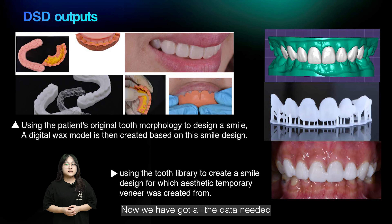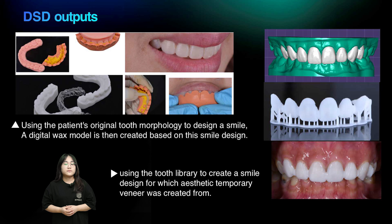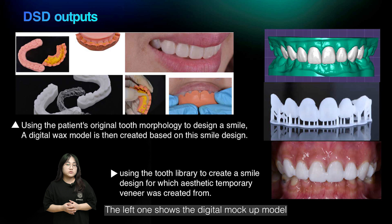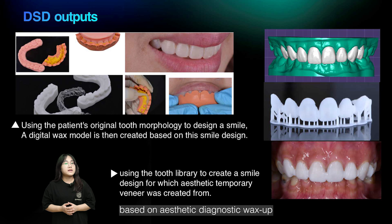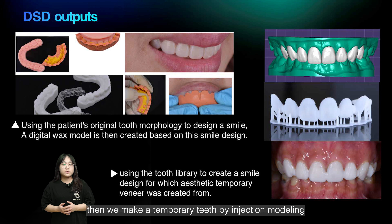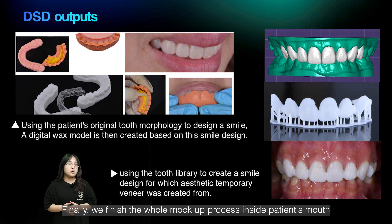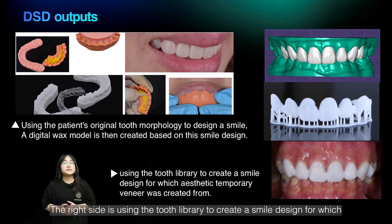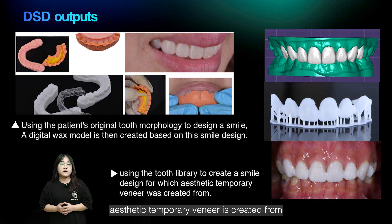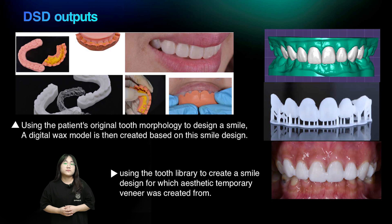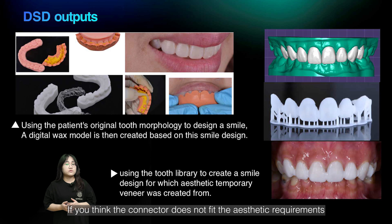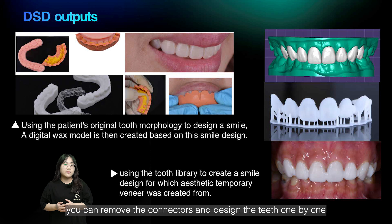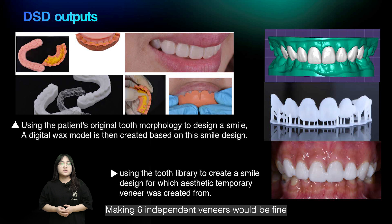Now we have all the data needed. Let's show you two kinds of DSD outputs. The left one shows the digital mock-up model — we make a duplicate of a mock-up guide based on aesthetic diagnostic wax-up, then make temporary teeth by injection molding, and finish the whole mock-up process inside the patient's mouth. The right side uses the tooth library to create a smile design, from which an aesthetic temporary veneer is created. We use a printer to print the temporary teeth and try them on inside the patient's mouth. The photo shows six veneers combined by connectors. If the connectors do not fit the aesthetic requirements, you can remove them and design the teeth one by one, making six independent veneers.